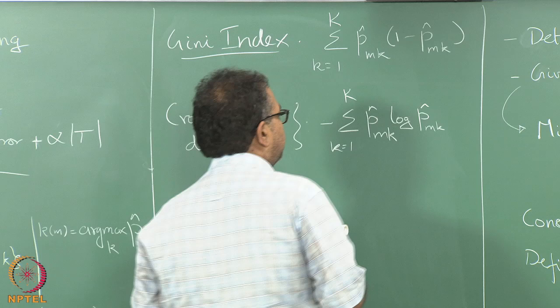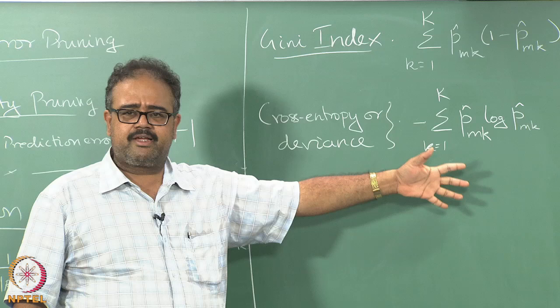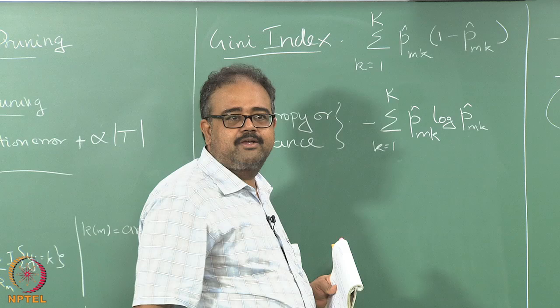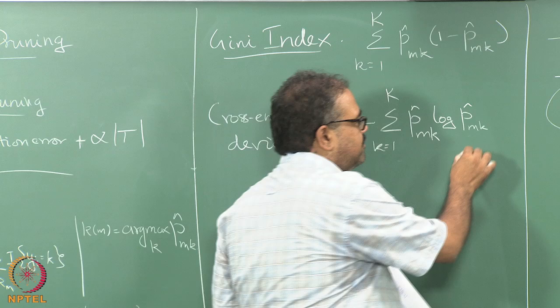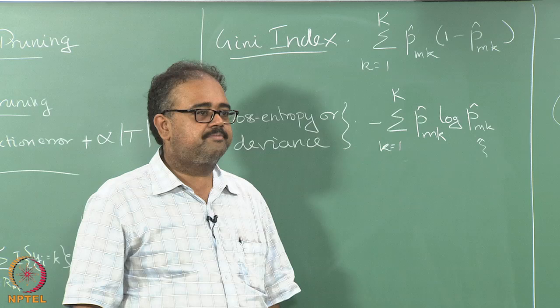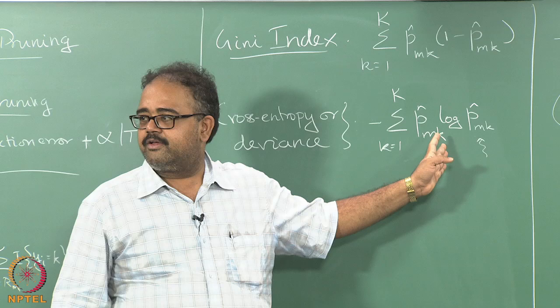The other popular measure is cross entropy, also known as deviance. It is given by the expression minus sum over K of P-hat_MK times log of P-hat_MK, which looks like Shannon's entropy. It is called cross entropy because the true output label distribution from the data and the estimated label distribution both appear. Since you use an unbiased estimator for the probabilities, you end up estimating the true probabilities, which is why it is called cross entropy.